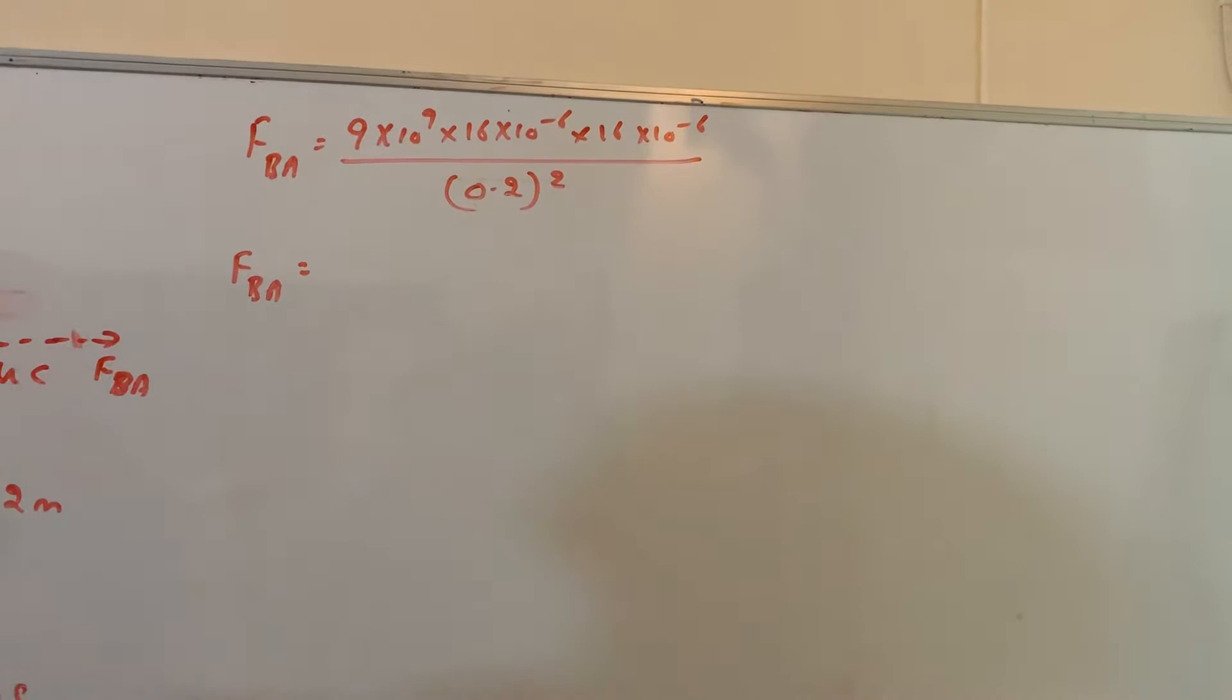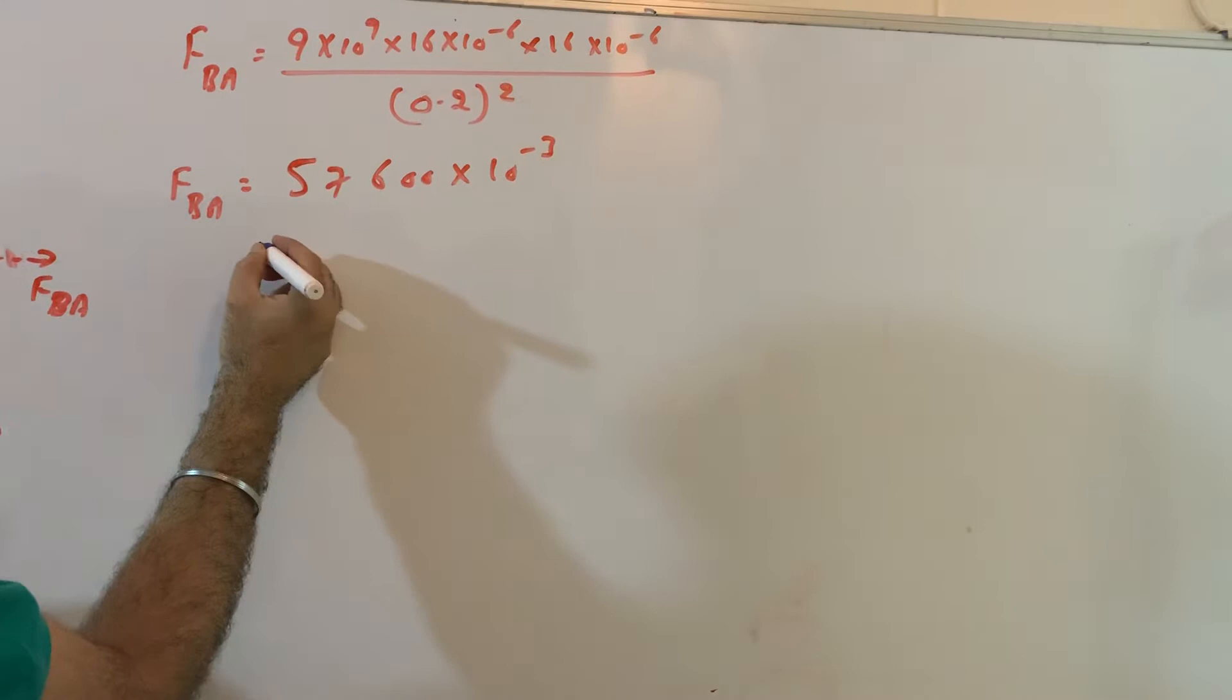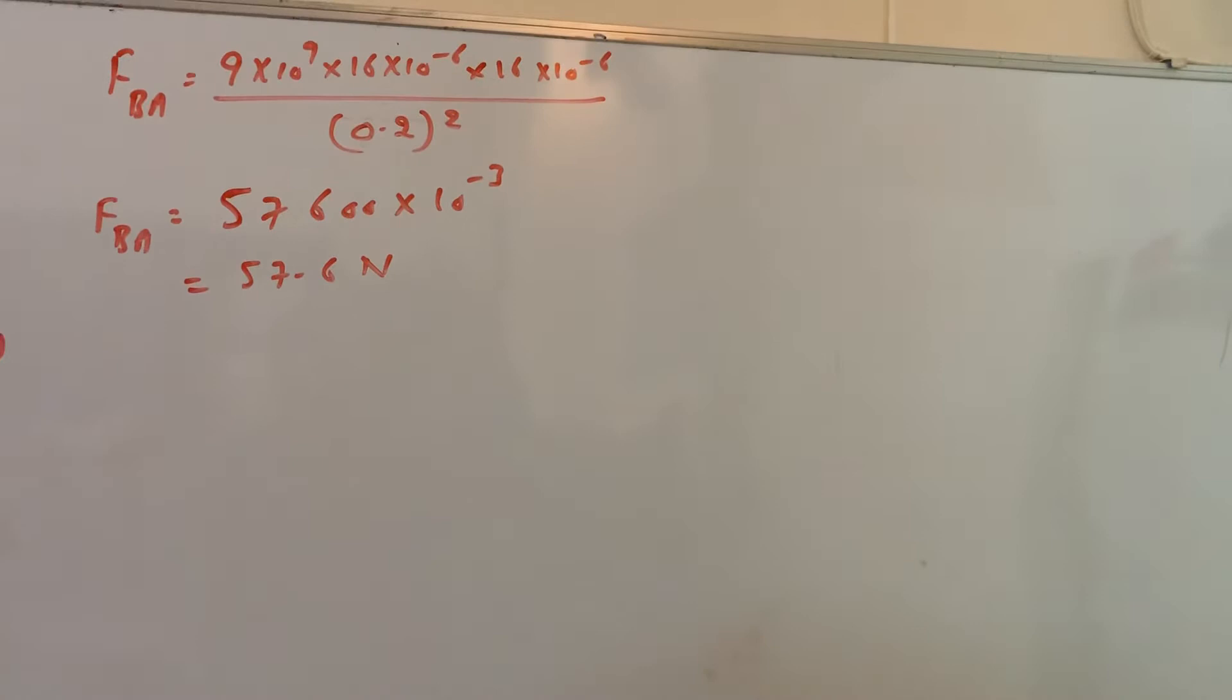So this comes out to be equal to, 0.2 whole square, so it will come out to be 57600 into 10 power minus 3, so which is nothing but 57.6.